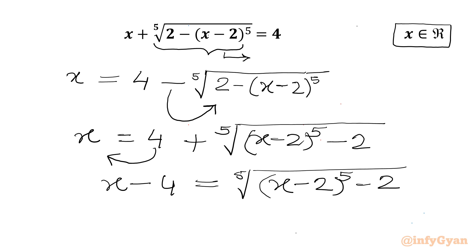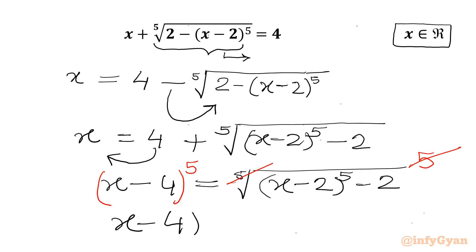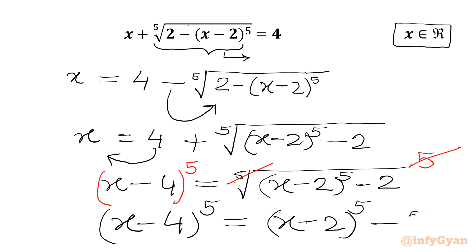Now let us raise both sides to the power 5. The fifth root and power 5 will cancel out from the RHS. So we get (x minus 4) whole power 5 equals (x minus 2) whole power 5 minus 2.